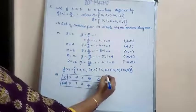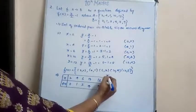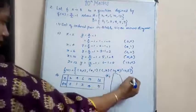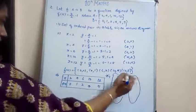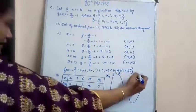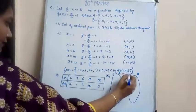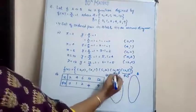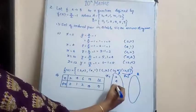So the next one is an arrow diagram. So these are the two sets, A and B, and function f(x) is from A to B. So write the elements of A.